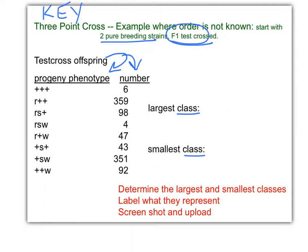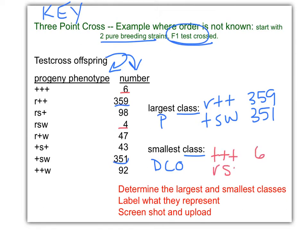What does the smallest class denote? Double crossover. Largest class, parental. Is there just one phenotype for each or two? Always two. So the highest number has got to be parental. The other highest number has got to be the other parental of the class. What about the smallest? Yep, there's a little number, there's a little number. Plus, plus, plus, six. RSW is four. That's the double crossover class.